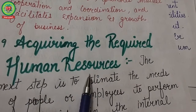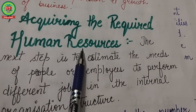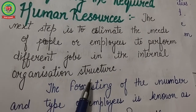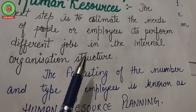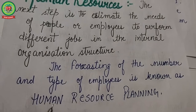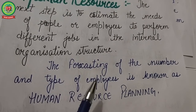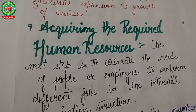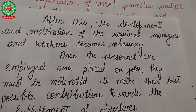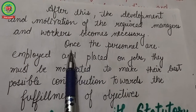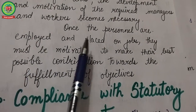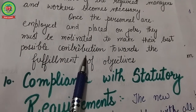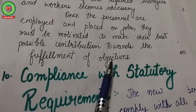The next step is acquiring the required human resources. The entrepreneur must estimate the needs of people to perform different jobs in the internal organization structure. Forecasting the number and types of employees required is known as human resource planning or manpower planning. Once personnel are employed and placed on jobs, motivation of the required managers and workers becomes necessary so they make their best possible contribution towards the fulfillment of objectives.